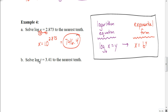Now let's try one where it's not a common logarithm: log base 3 of t equals 3.41. Drag the base over — so it becomes t equals 3 to the 3.41 power — and your answer rounded to the nearest tenth is 42.4.